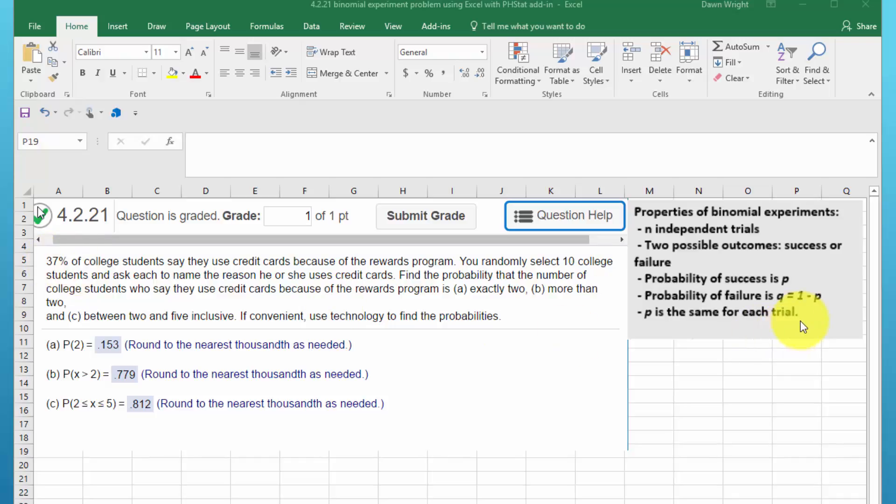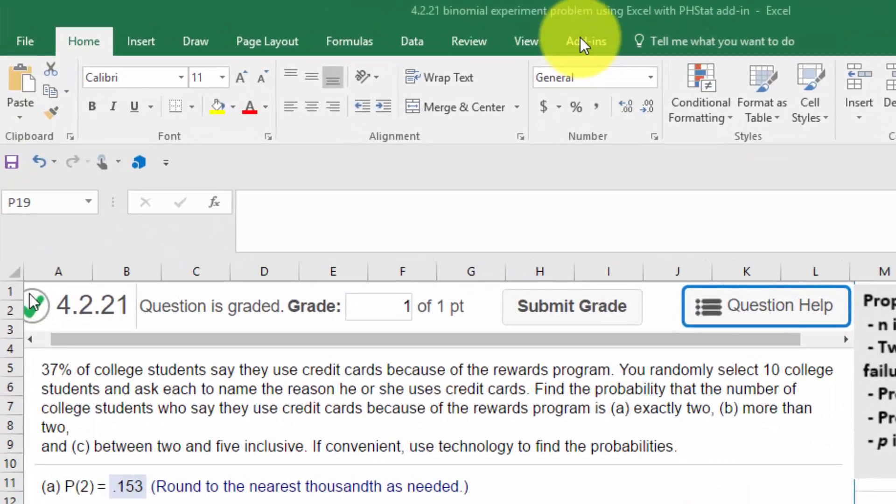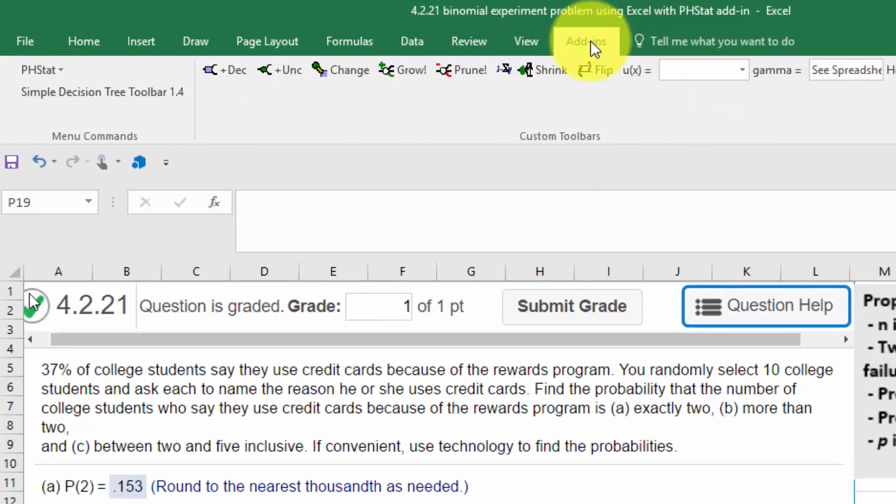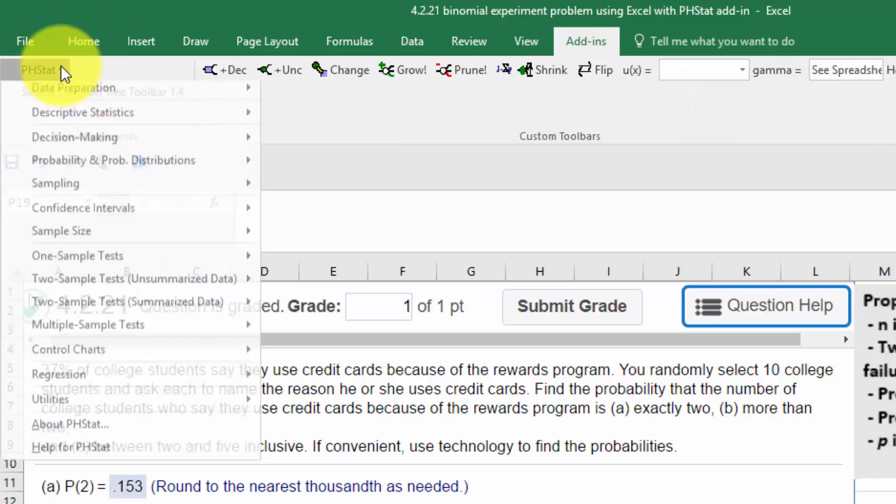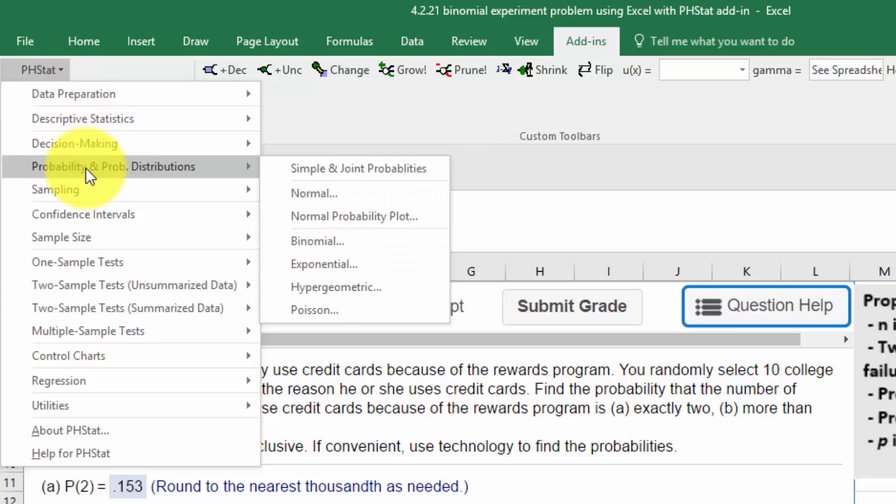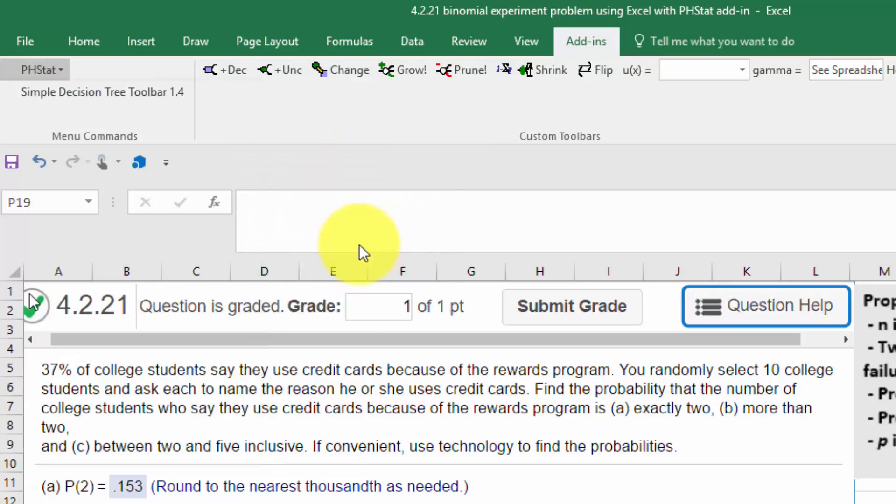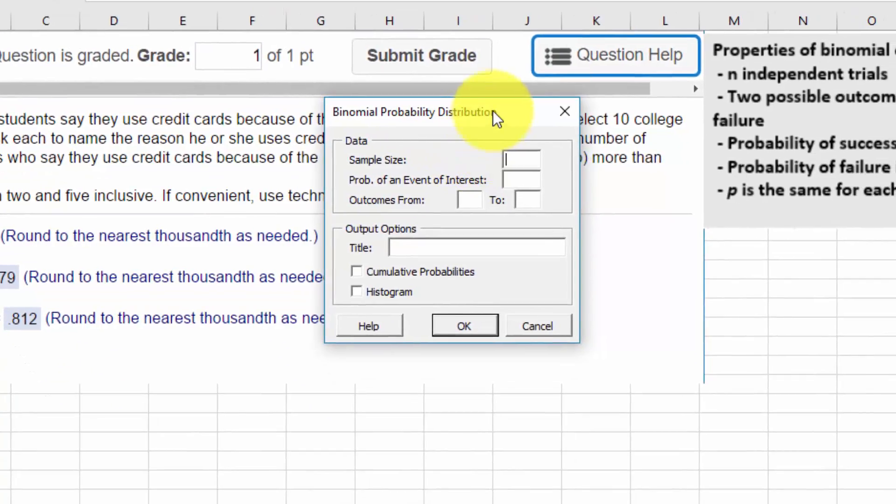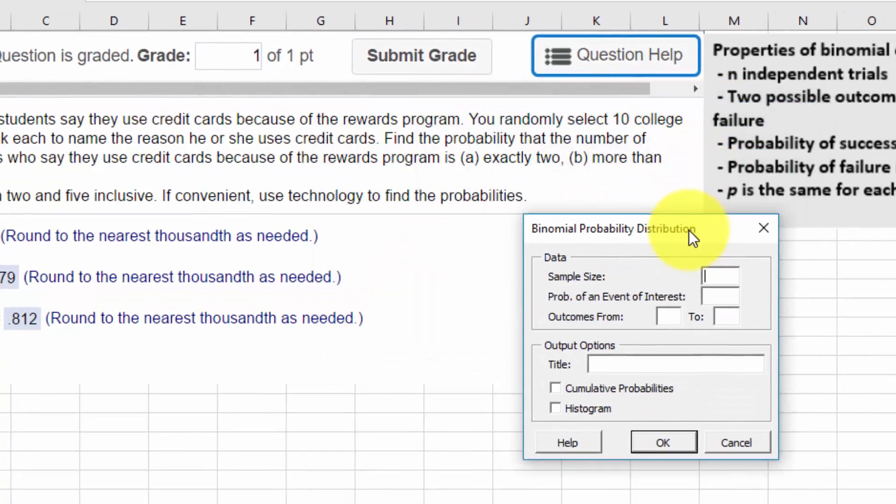Okay, so let's solve this using Excel and we're going to use the PHStat add-in that I've told you about. It makes it go pretty quickly. Let's click on add-ins, PHStat, and we go down here to probability and probability distributions, and we look for the binomial. And we get this little dialog box.